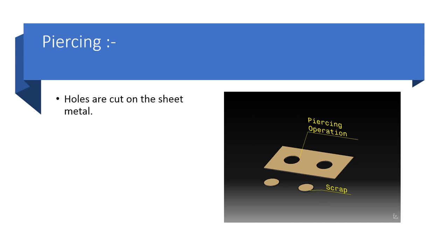In piercing, holes are cut on the sheet metal. If the sheet with the hole is the useful component — meaning the hole is what you want — then the operation is piercing. The cut-out disk is considered scrap in piercing.